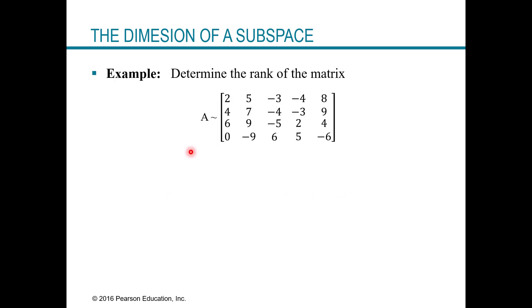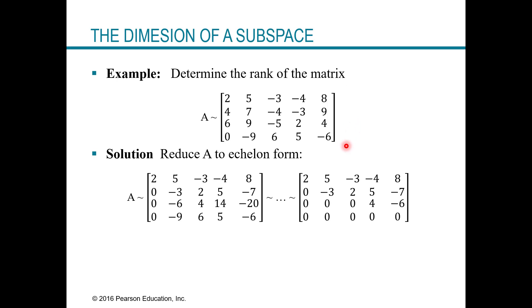Okay, so let's take a look at this example. We want to determine the rank of this matrix A. So we'll reduce this one just down to echelon form. And the reason why is because we want to identify the pivot columns. So notice there's three pivot columns, and so the matrix has three pivot columns. So the rank of A is just three.